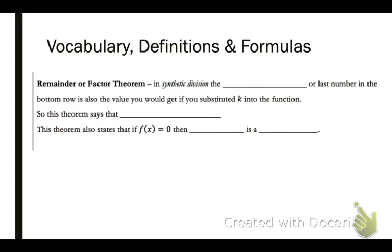Now go back to just the top of the sheet at the beginning with the vocabulary definitions. We can also use this same method for something else. In synthetic division, the remainder, or the last number in the bottom row, is also the value that you would get if you substituted k into the function. You've done this before. So this theorem says that if you plug k into the function, f of k, that equals the remainder. This theorem also tells us that if you plug in a value and the remainder is zero, that means your divisor is what we call a factor.